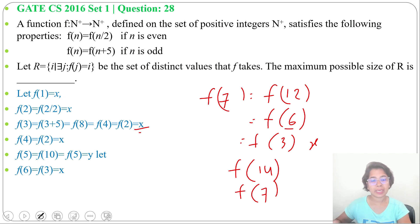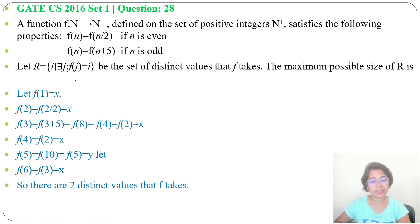Now f(10) - f(10) will be y. So till now we found just 2 values, x and y. So the answer will be 2. There are 2 distinct values that f takes, or we can say there are 2 distinct images for all positive integers.